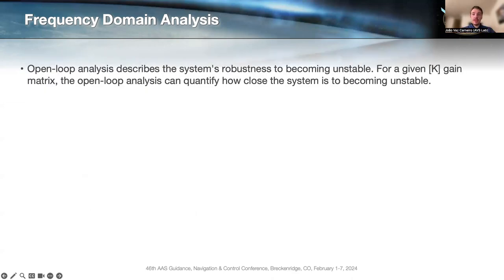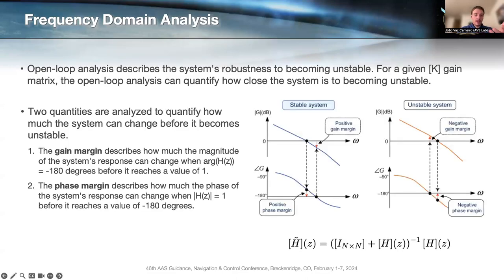To understand this, we analyze the open loop transfer function. One thing that's really important to understand is that even though we're analyzing the open loop transfer function, we're still describing the closed loop behavior. For a given K, we're trying to understand if the closed loop behavior is good or not. To do that, we look at these two margins, the gain margin and the phase margin. These really come from the relationship between the closed loop system and the open loop system, which I'm showing on the bottom right.